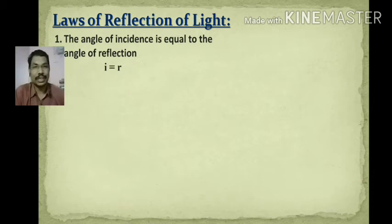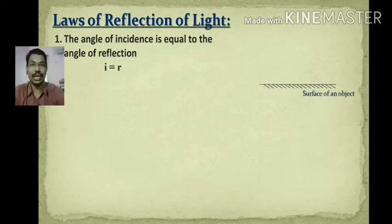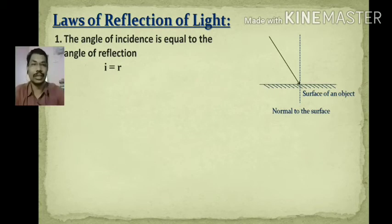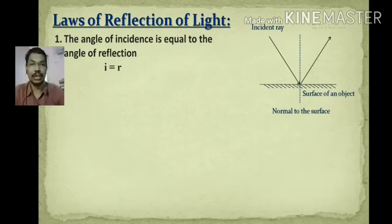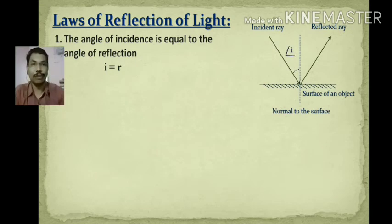The angle of incidence is equal to the angle of reflection. Angle i is the angle of incidence and angle r is the angle of reflection. When a light ray comes and is incident on the surface, it will get bounced back or reflected in another direction. The angle between the incident ray and the normal is called the angle of incidence i, and the angle between the normal and the reflected ray is called the angle of reflection r.